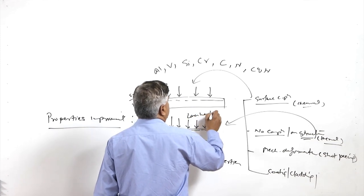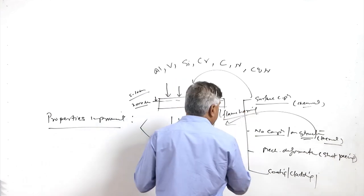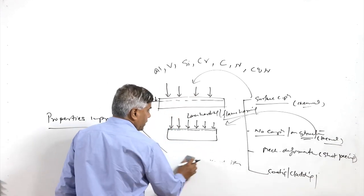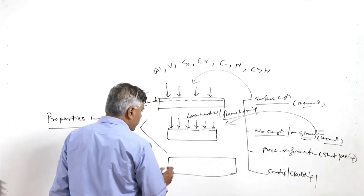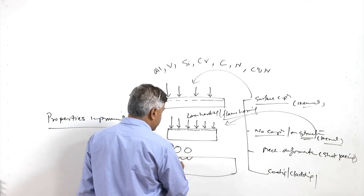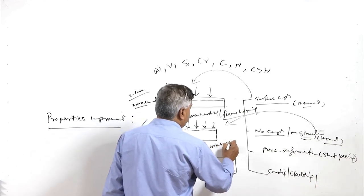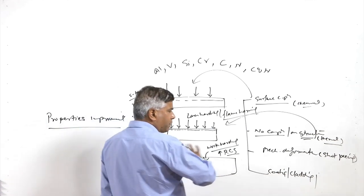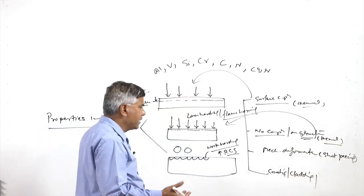The third approach is surface deformation, where controlled rolling or shot blasting achieves near-surface layer deformation. This deformation leads to work hardening or strain hardening of the surface layers and also develops residual compressive stresses at the surface due to the near-surface layer deformation in a controlled way. This results in improved fatigue resistance and improved hardness of the material.